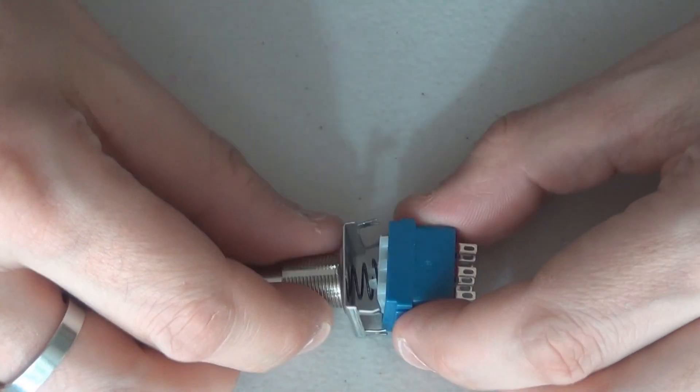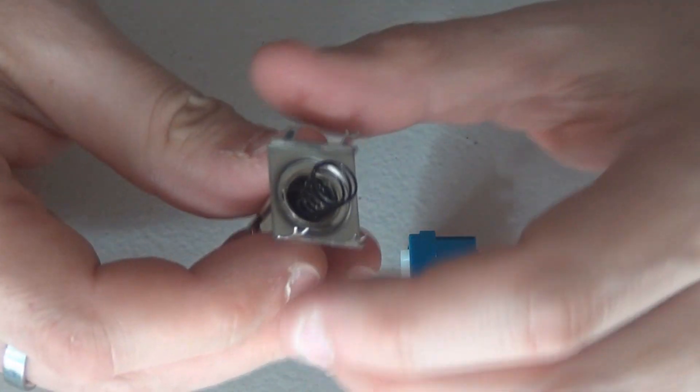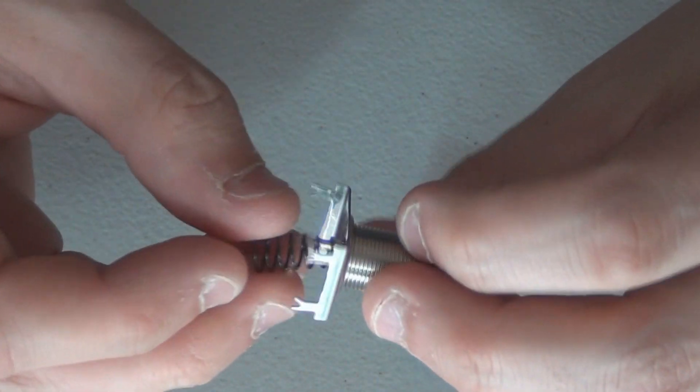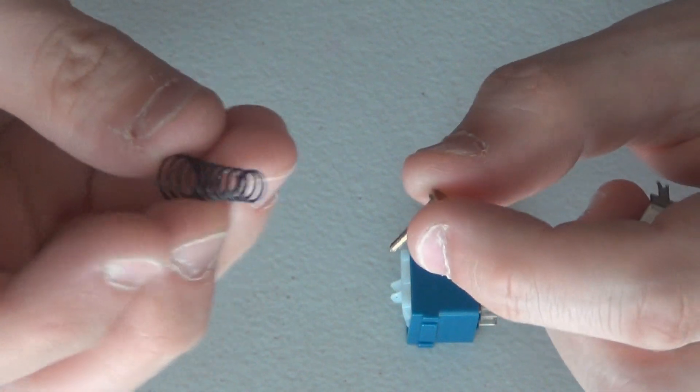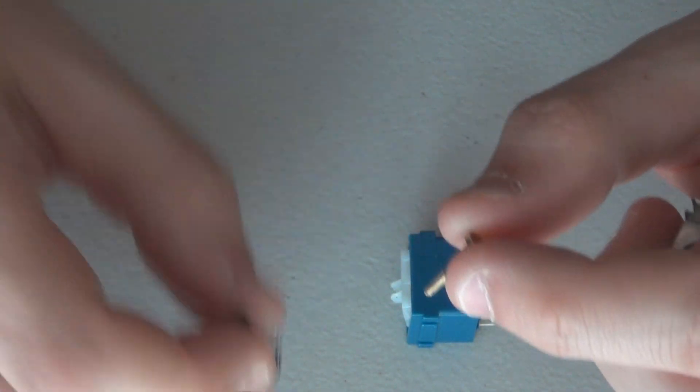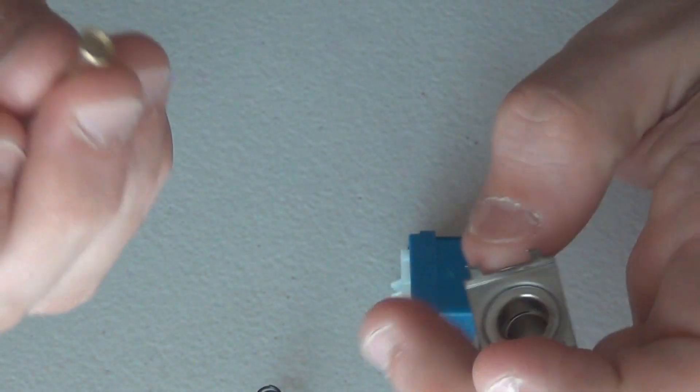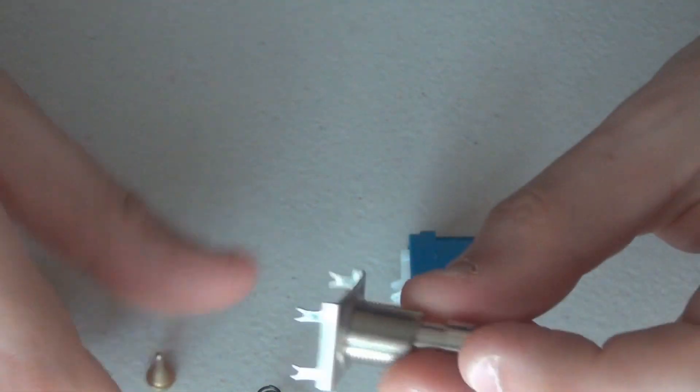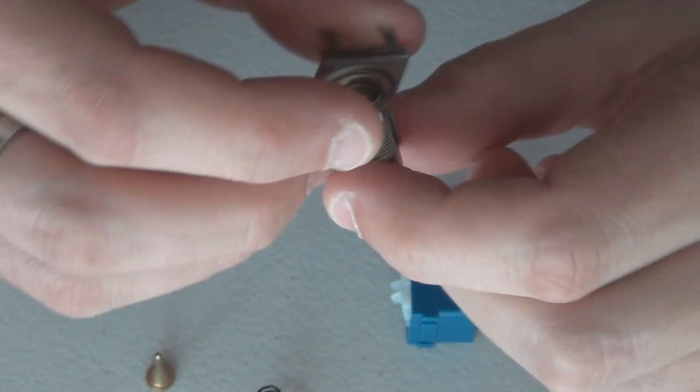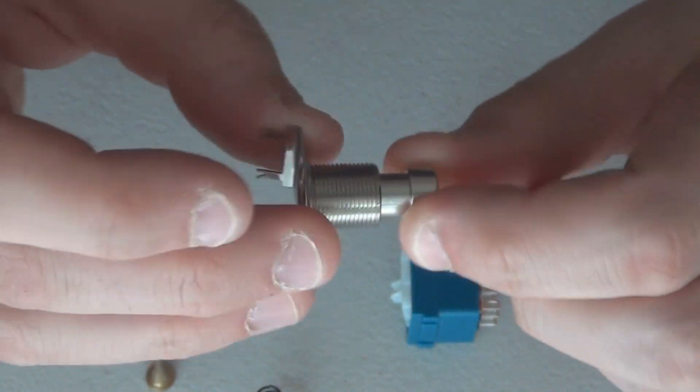So now the top will come off and we can take a look at what's inside the switch. First let's take a look at the top of the switch. You have the spring which is this bit here, and you have the plunger and this is the actuator with sort of like a piston mechanism.